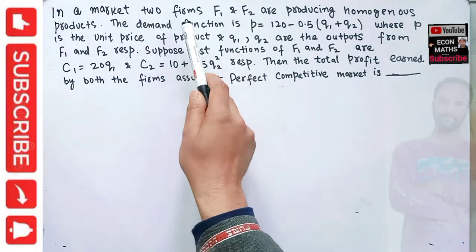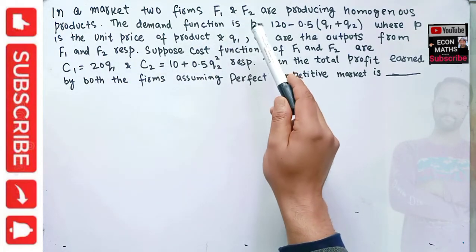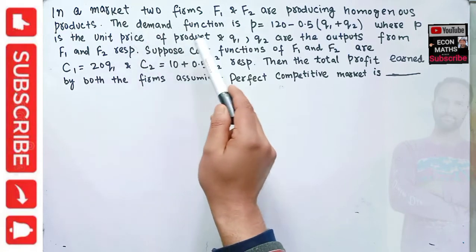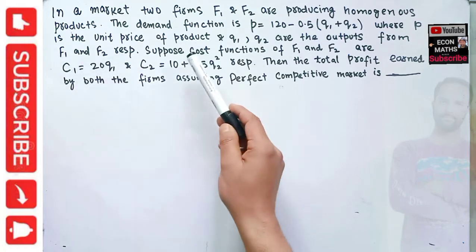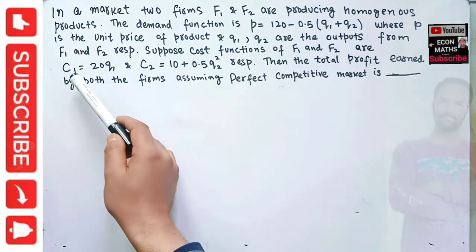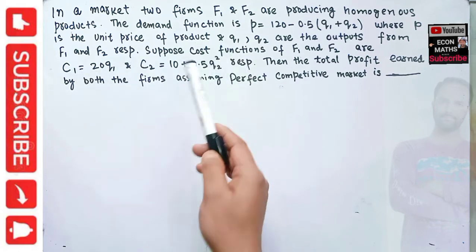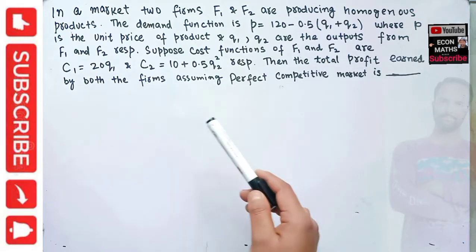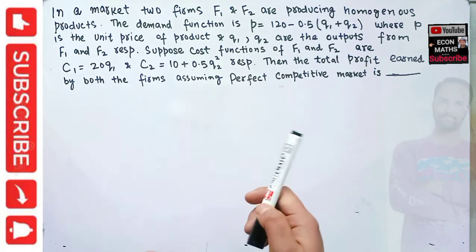Next question: in a market, two firms F1 and F2 are producing homogeneous products. The inverse demand function is P = 120 - 0.5(Q1 + Q2), where P is the unit price and Q1 and Q2 are outputs from firms F1 and F2 respectively. The cost functions are C1 = 20Q1 and C2 = 10 + 0.5Q2 squared. We need to find the total profit earned by both firms assuming a perfectly competitive market.